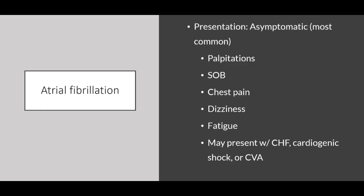Most commonly, our patients with atrial fibrillation are going to be asymptomatic. However, if they do become symptomatic, they may present with palpitations, shortness of breath, chest pain, dizziness, and fatigue. Additionally, these patients may present in the context of congestive heart failure, cardiogenic shock, or cerebrovascular accidents such as strokes or TIAs.